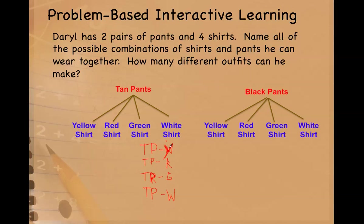Okay. Yellow, red, green, white. So I have one, two, three, four. You can also see that same set of combinations up here with the diagram tree. So here I have an organized list and up here I have a diagram tree.